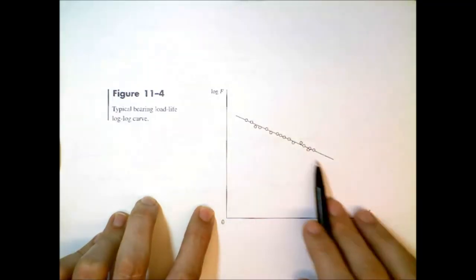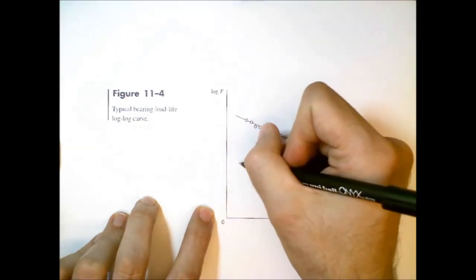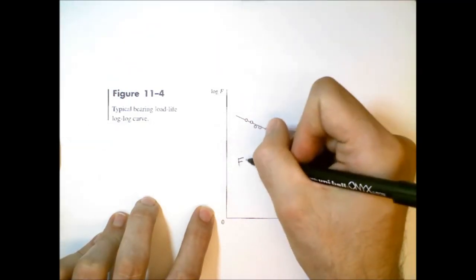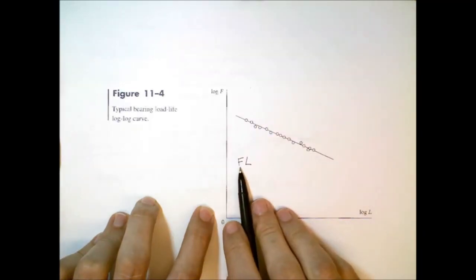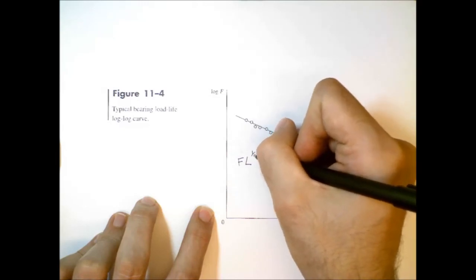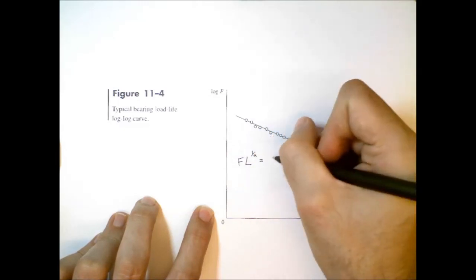Now, because of this observation, we can write a formula that relates force and life. So we can say that force times life in rotations raised to the power of 1 over A is constant.